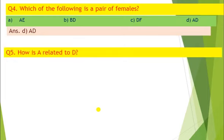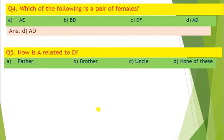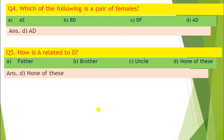Question number 5: How is A related to D? None of these. A is not the father, not brother, not uncle. So none of the given options is correct. So none of these.